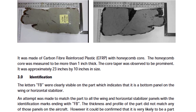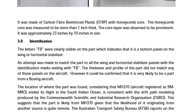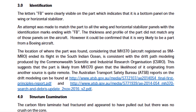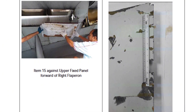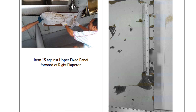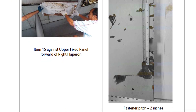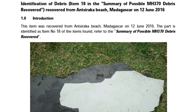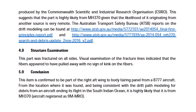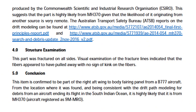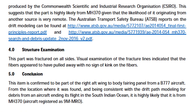Item 12, possible wing or horizontal stabilizer panel: 'The carbon fiber laminate had fractured and appeared to have pulled out, but there was no crush on the core.' Tension failure. Item 15, upper fixed panel forward of the flap on right side: 'The outboard section had the fasteners torn out, with some fastener holes still recognizable. The inboard section had signs of net tension failure, as it had fractured along the fastener holes.' Tension failure. Item 18, right-hand nose gear forward door: 'Close visual examination of the fracture lines showed the fibers were pulled, and there was no sign of kink.' Tension failure.